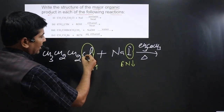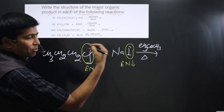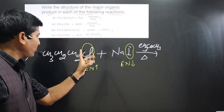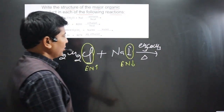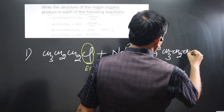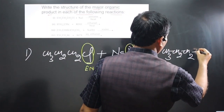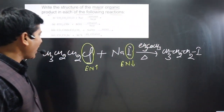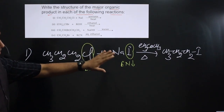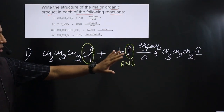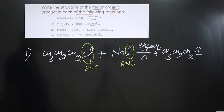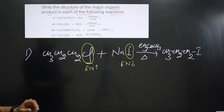So iodine will come in place of Cl and Cl will come in place of iodine. When Cl replaces iodine, NaCl is removed. The final product is CH₃CH₂CH₂I — 1-iodopropane. So 1-chloropropane is converted into 1-iodopropane by the Finkelstein halogen exchange reaction.